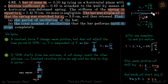When the block is going towards the left, friction acts towards the right. When it reaches the extreme and then goes back towards the right, friction acts towards the left. So after every half cycle, friction changes direction. This is different from problems where the constant force doesn't change direction — here the magnitude is constant but the direction changes every half cycle.